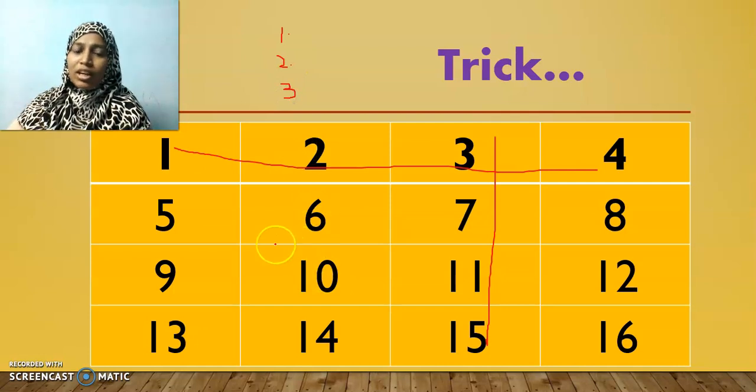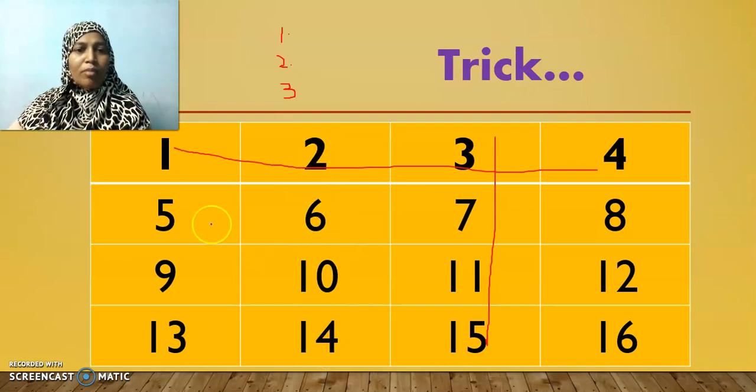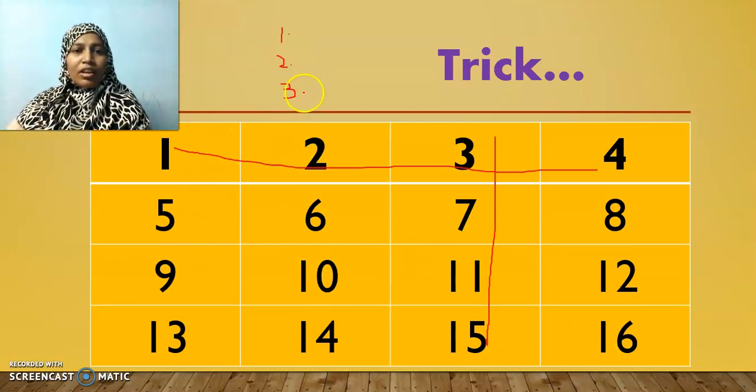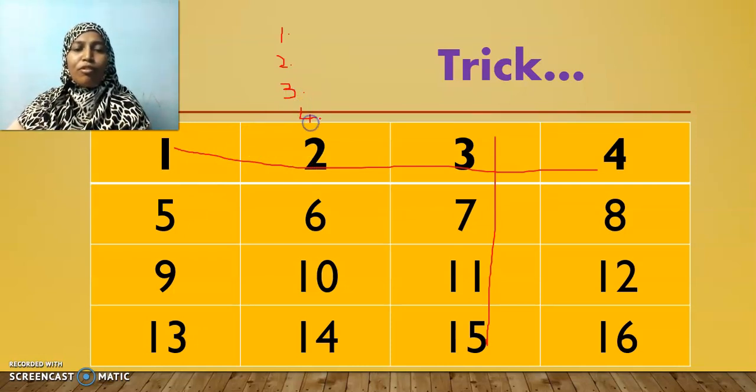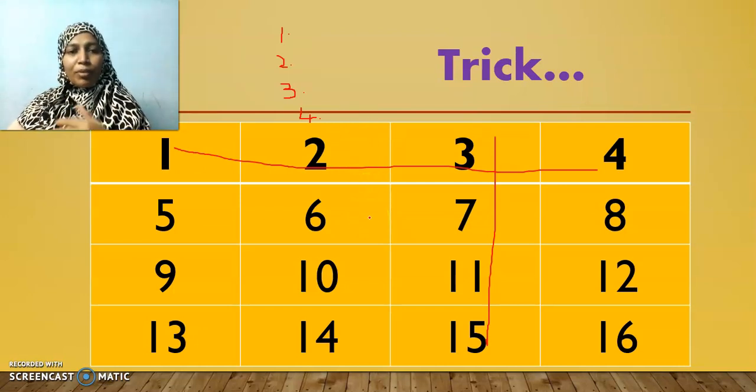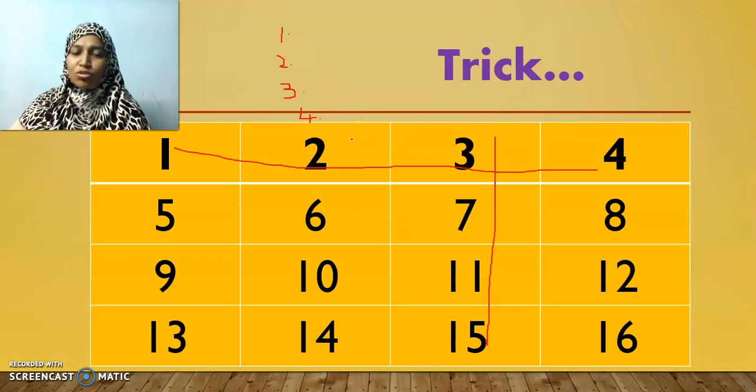And that number should not lie in the row and column of first number and second number. So you will have remaining four numbers alone to think of that. Is it clear? Okay. Similarly, choose another number 4. That fourth number should not lie in the rows and columns of all the previous three numbers together. So now you have chosen four numbers. Each and every one of you would have chosen different numbers. But remember, you should follow that condition.